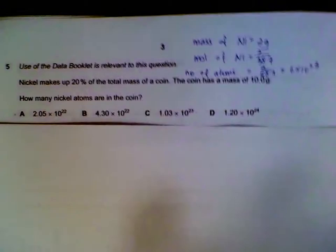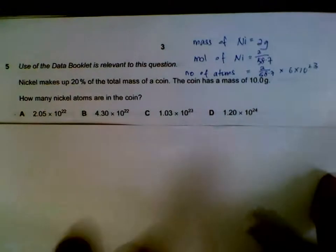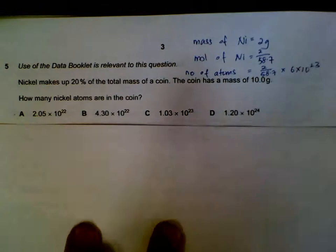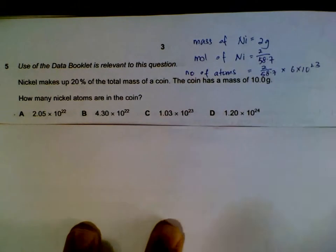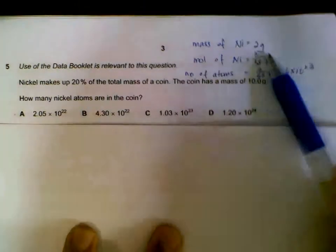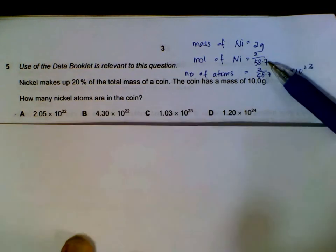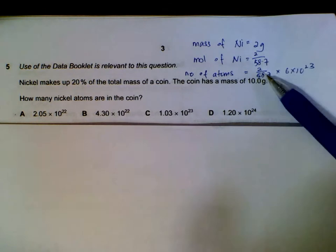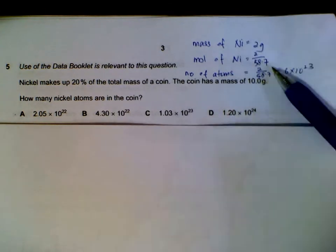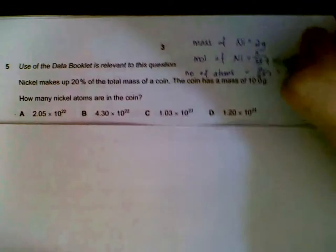Number five. We have a coin that has a mass of 10 grams, and 20% is made out of nickel. So simply 2 grams will be made out of nickel. From there, we find out that the moles of nickel will be 2 divided by MR, which can be found from the periodic table. In the end, we have 2 over 58.7 moles of nickel.